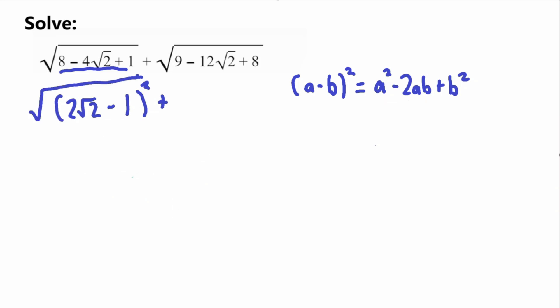Now we do the same thing for the second term. The inside of the second square root is 9 minus 12 times square root of 2 plus 8. We want to get this into the form a squared minus 2ab plus b squared, so we can eventually write it as a minus b squared with a corresponding square that cancels the outer square root.